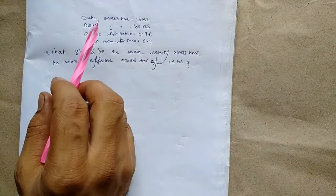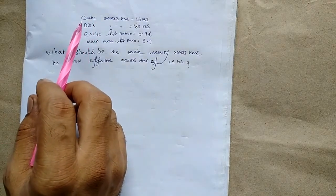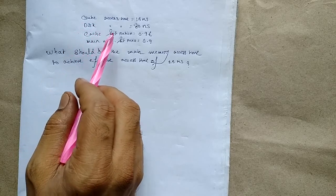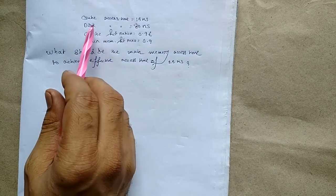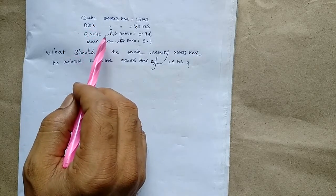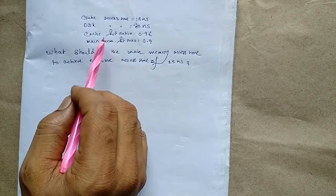Now consider another example. This is a three-level memory system. There are cache memory, disk memory, and main memory.